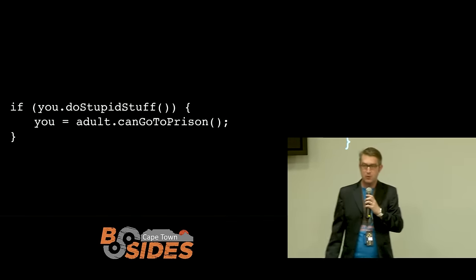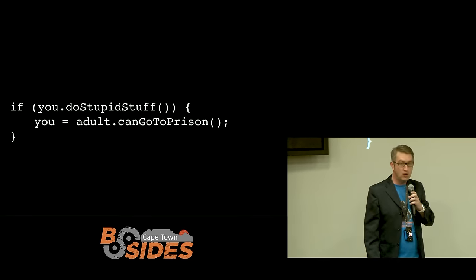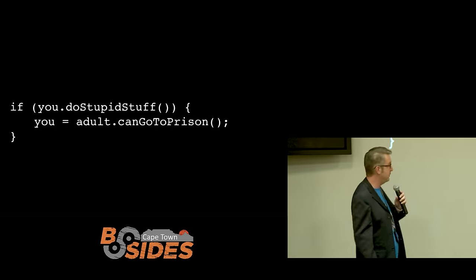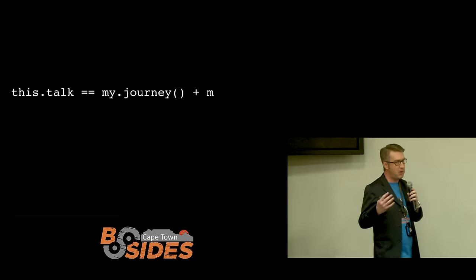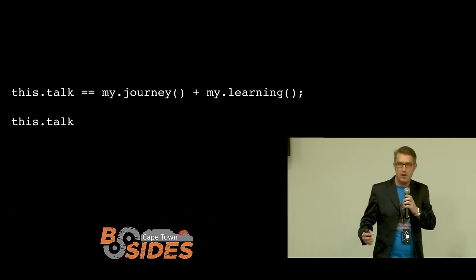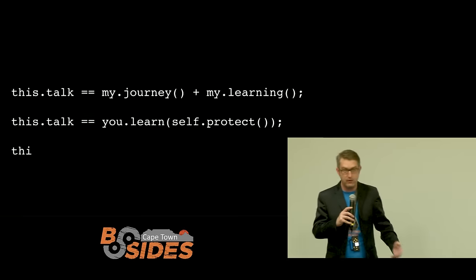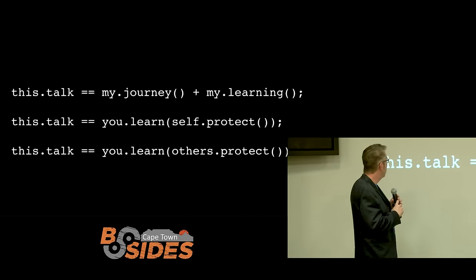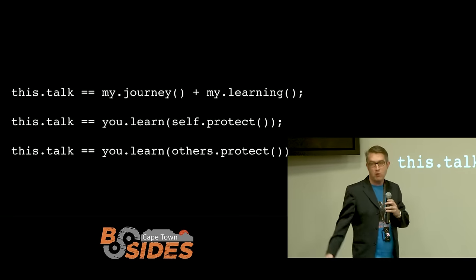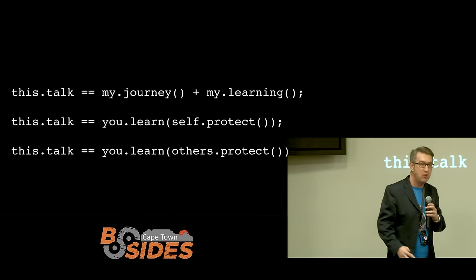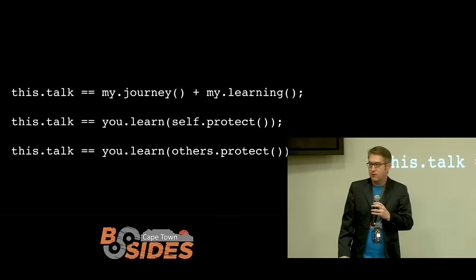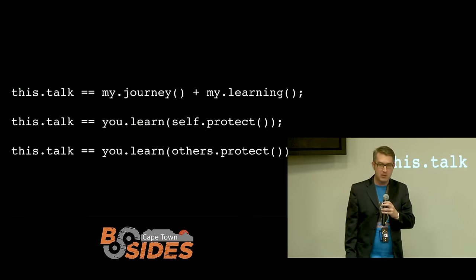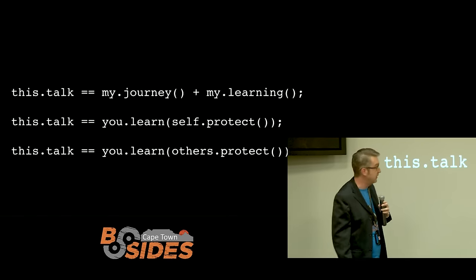I just want to put the brakes on here. If you do stupid stuff, you're an adult and you can go to prison. I will show you many interesting new ways of going to prison if you're looking at doing that today. This talk is really just about my journey and what I've been learning about. I'm quite new in the security field — I don't work in it. I'm a software developer; I work for a bank. This is just about what I've been messing around with. I'll show you what's worked for me and what hasn't. If you've got any ideas, do come to me afterwards.